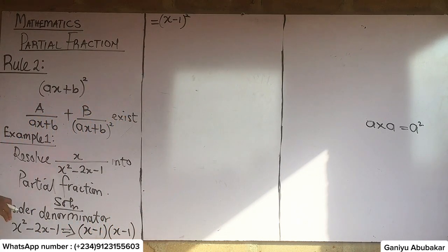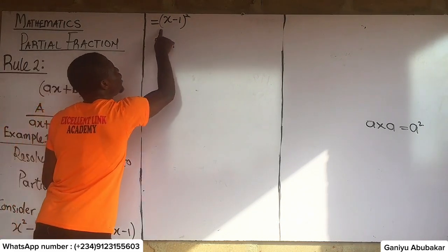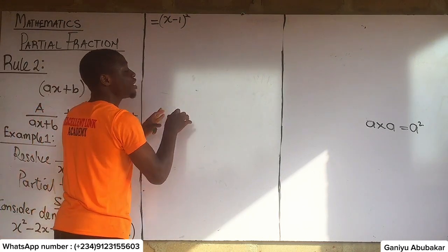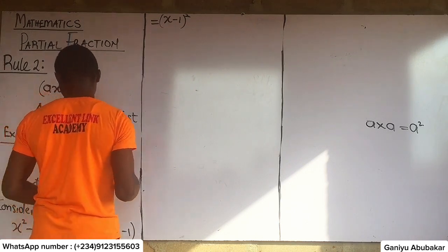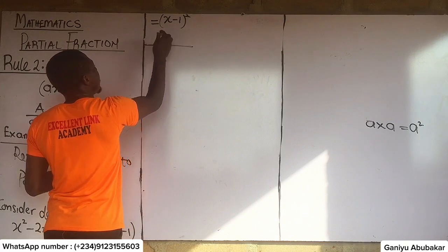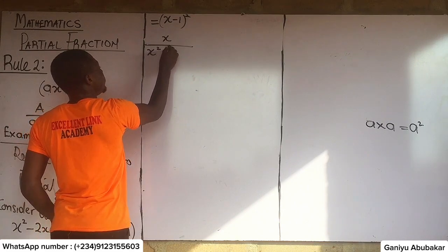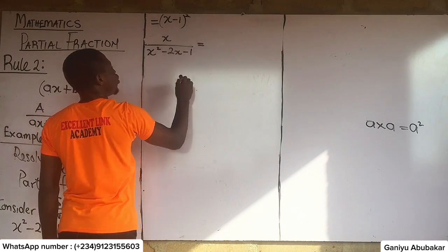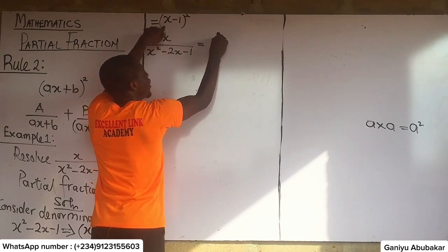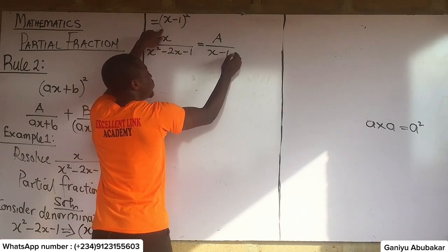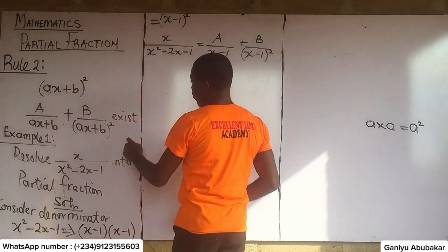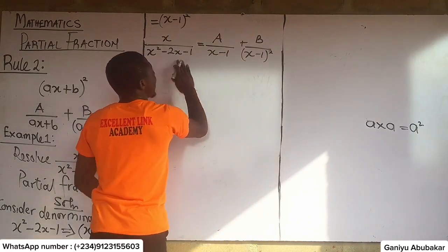This means we have a repeated factor as the denominator. So to write the general partial fraction form, we have x over (x² − 2x − 1) equal to A over (x − 1) plus B over (x − 1) squared, as established by Rule Two.